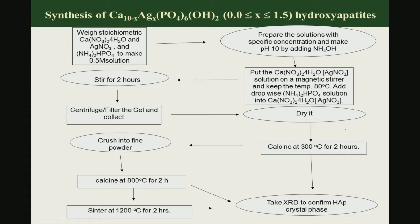Like any other wet chemical synthesis, you start with a precursor solution of silver as well as hydroxyapatite. The precursor solution here is silver nitrate for silver, and for hydroxyapatite we are using calcium nitrate 4H₂O (Ca(NO₃)₂·4H₂O). We make a 0.5 molar solution of these precursors. Then you stir it for 2 hours, centrifuge, crush it, and then calcine it at 800 degrees Celsius for 2 hours. After calcination you sinter it at 1200 degrees Celsius for 2 hours.